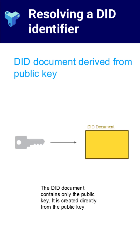In contrast, DID:key uses a self-contained model. The DID itself includes the public key material, allowing the entire DID document to be constructed locally without querying a remote server or ledger. This makes it ideal for offline use, ephemeral identities, or constrained environments, though it lacks support for key rotation, service discovery, or document updates.